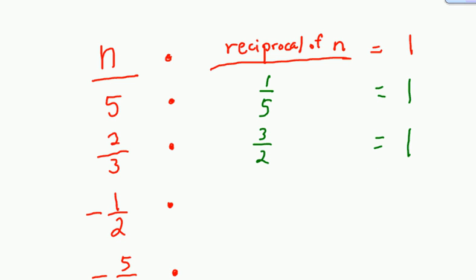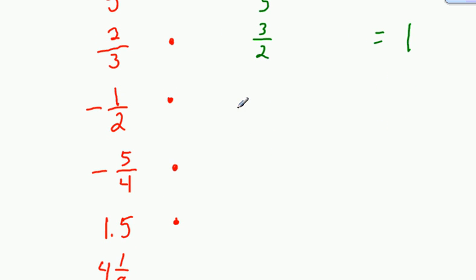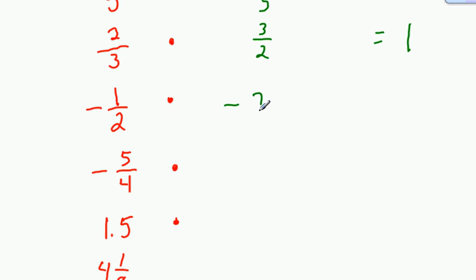Now, very important when you have a negative: when you multiply a negative by a negative, you get a positive. So the only way to end up with positive 1 is if the reciprocal of any negative number is also negative.